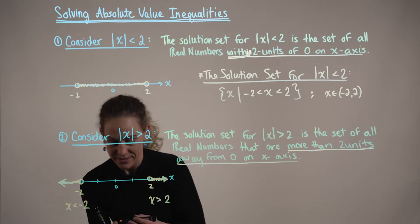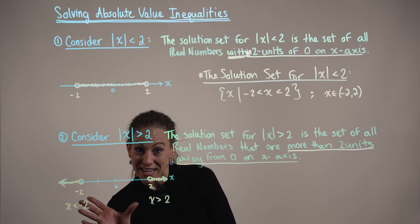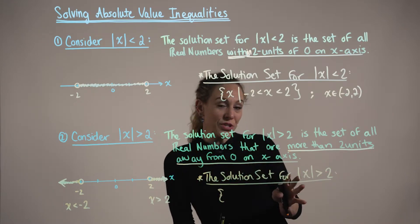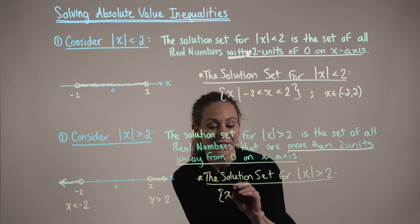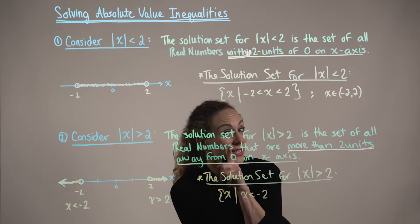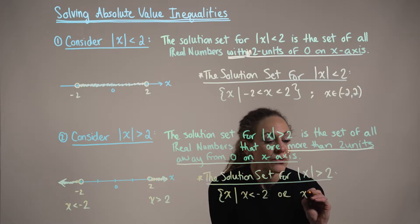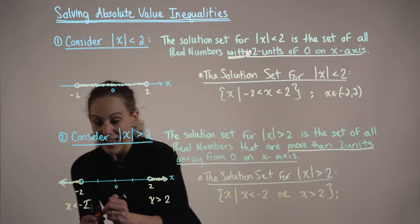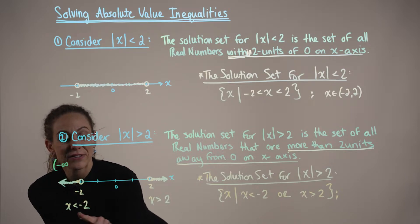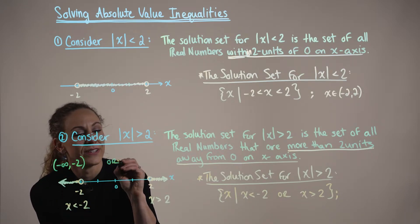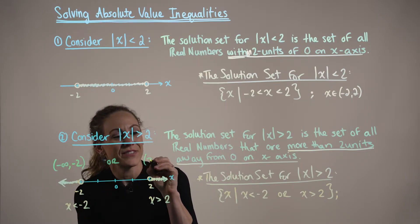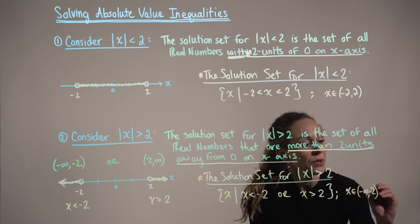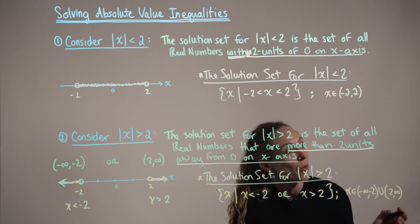Notice how these two cases are opposites of each other, and we have two distinct sets in case 2. The solution set for the absolute value of x being greater than 2 is the set of all x values where x is strictly less than negative 2 or strictly greater than positive 2. In interval notation, x is an element of the interval from negative infinity to negative 2, united with the interval from positive 2 growing towards positive infinity.